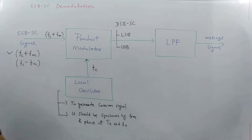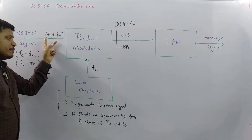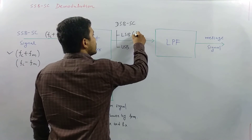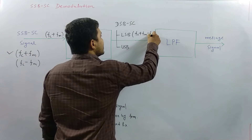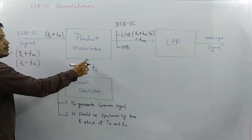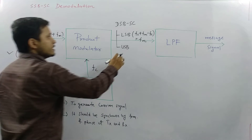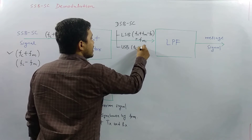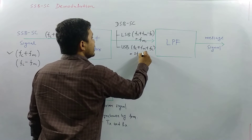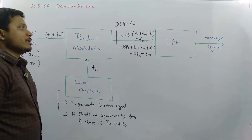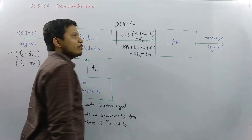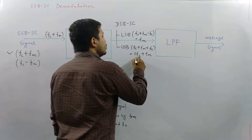The lower sideband is calculated as the difference of the two frequencies: FC plus FM minus FC, which gives FM — that is the modulating signal frequency. The upper sideband is the sum: FC plus FM plus FC, which gives 2FC plus FM.